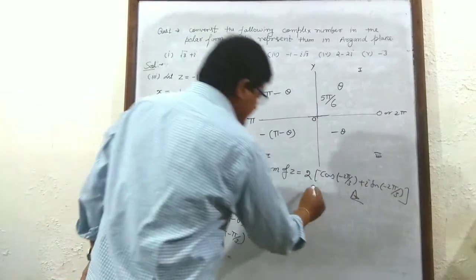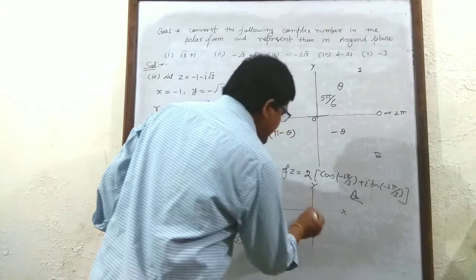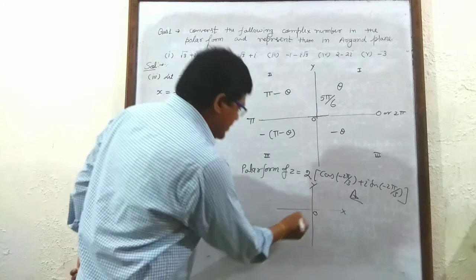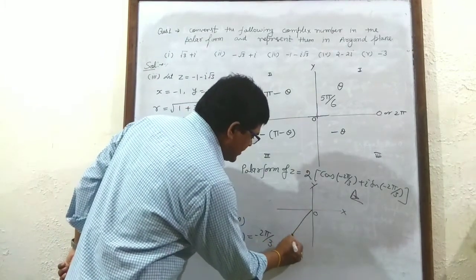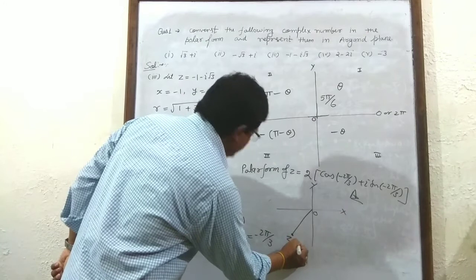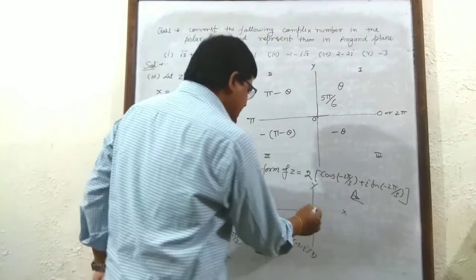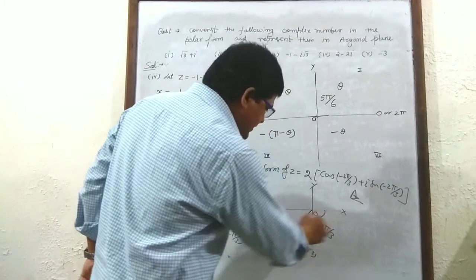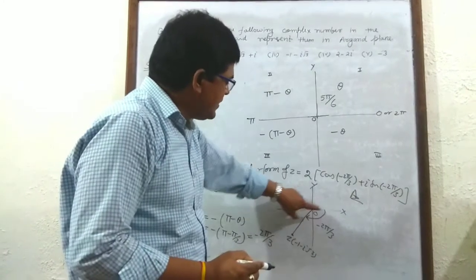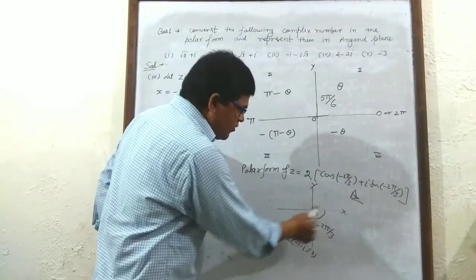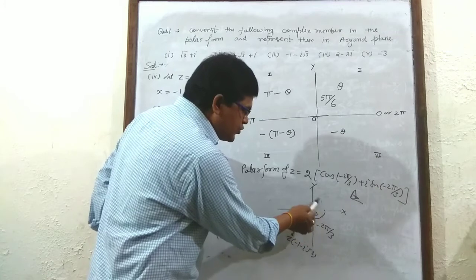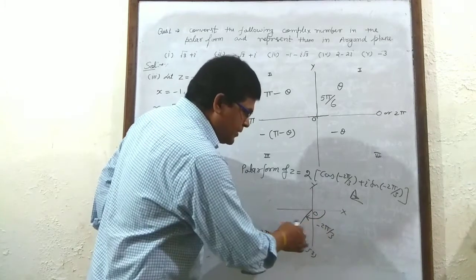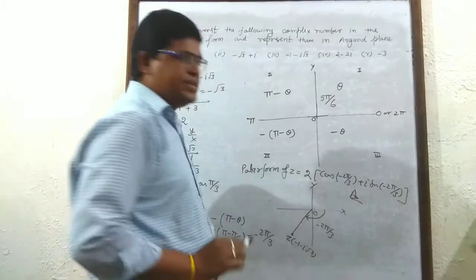In the Argand plane, z = −1 − i√3 belongs to the third quadrant, shown with angle −2π/3. The negative angle is represented clockwise from the positive real axis, while positive angles are represented anti-clockwise. Complex numbers in the upper half (first and second quadrants) are shown anti-clockwise, and those in the lower half (third and fourth quadrants) are shown clockwise.